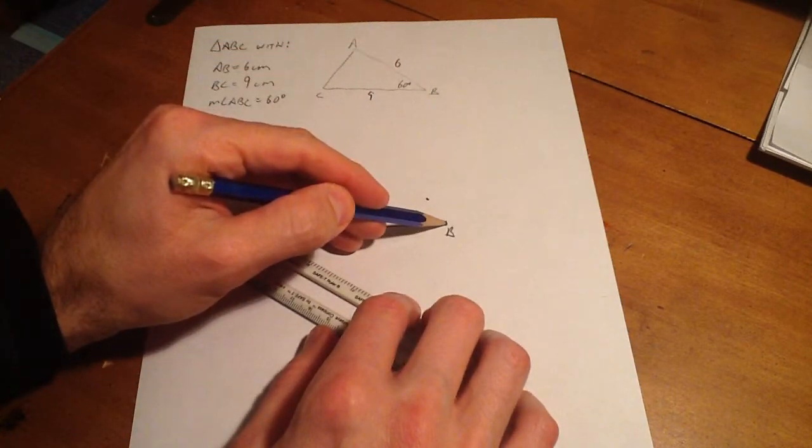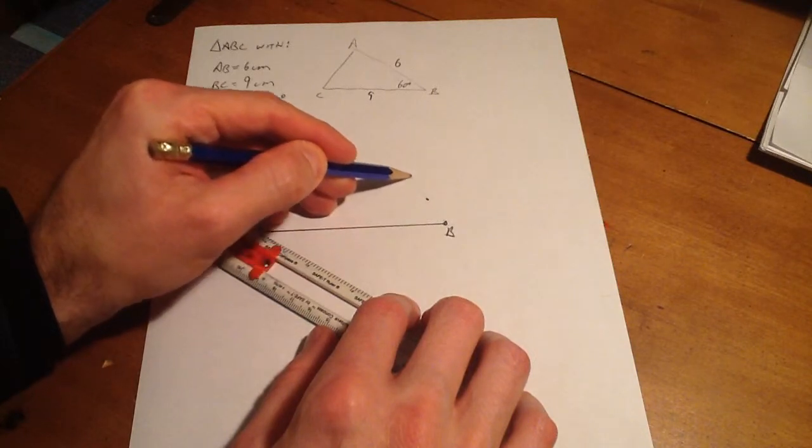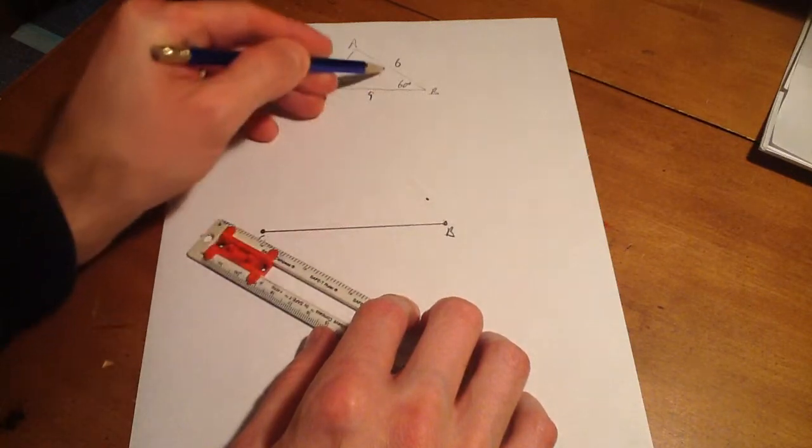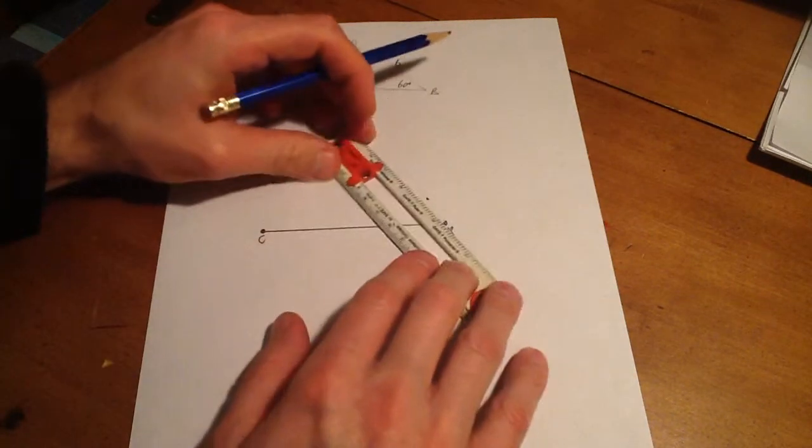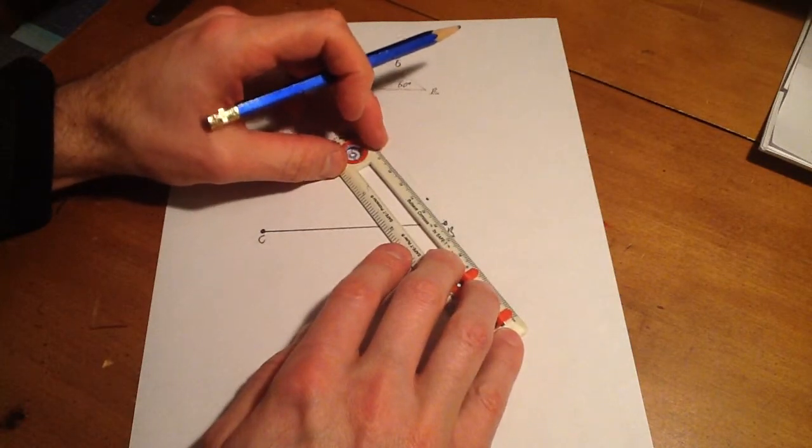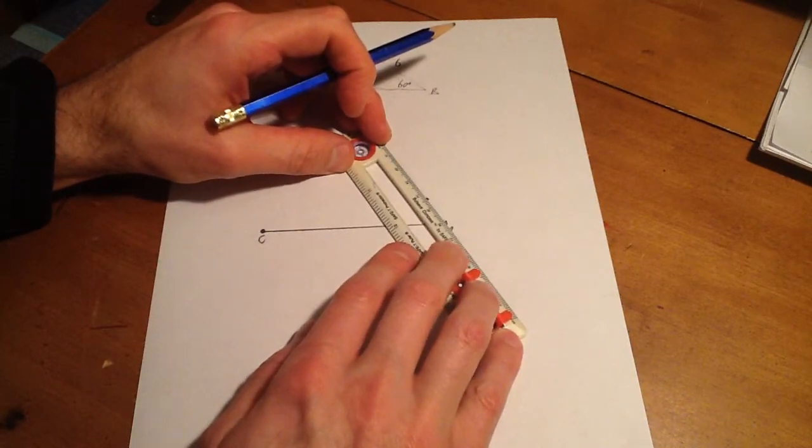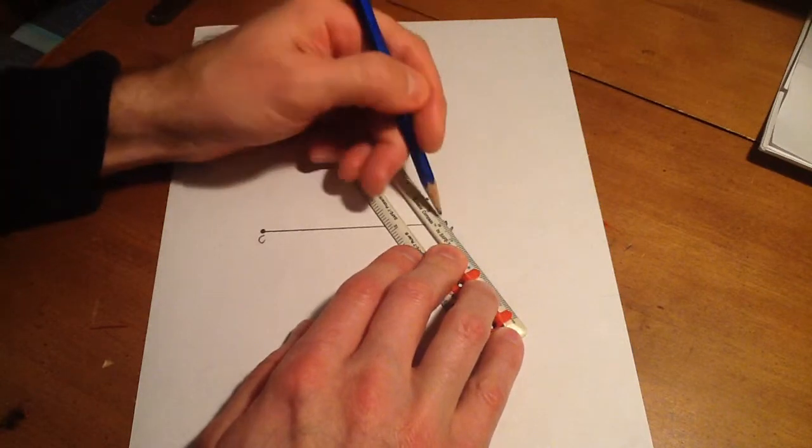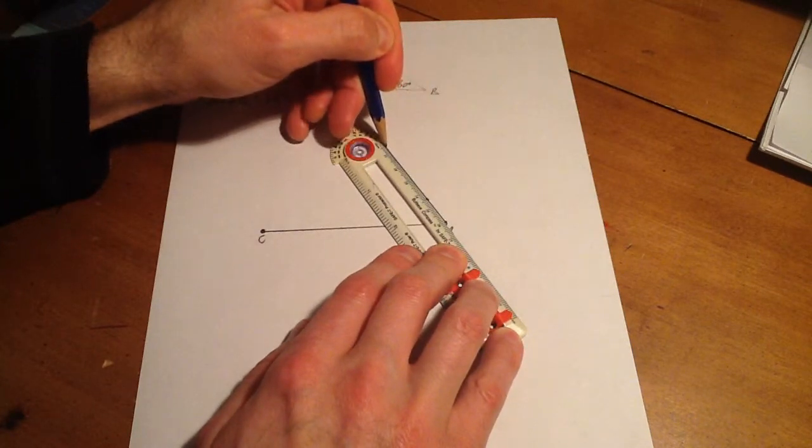In the direction of 60 degrees, I want this line segment to be 6 cm long. I'm just going to line up my cm ruler here at 6 cm, line up with my 60 degree mark, and go like this.